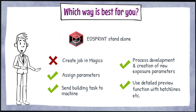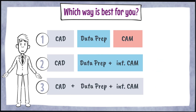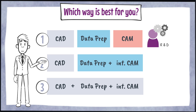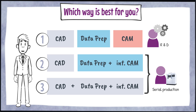Using the EOSPrint software directly would enable the features last mentioned. In the integrated modules you can assign exposure parameters but you cannot create them. So for example, an application specialist at EOS would want to use workflow one, while users in the context of serial production would probably go for method two or three.